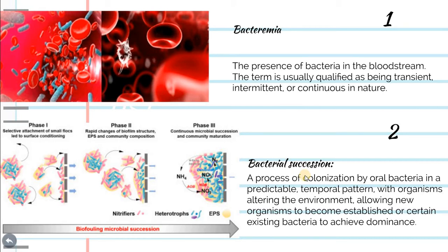Bacterial succession is a process of colonization by oral bacteria in a predictable temporal pattern, with organisms altering the environment, allowing new organisms to become established or certain existing bacteria to achieve dominance. For example, in the formation of oral plaque or biofilm, at first there will be a predominance of gram-positive bacteria, followed by gram-negative, until an established plaque is formed.